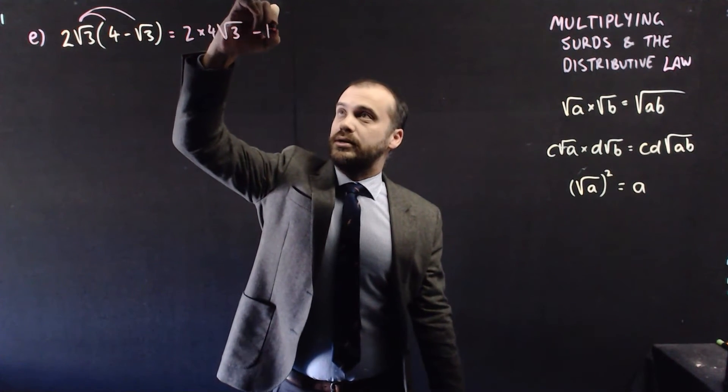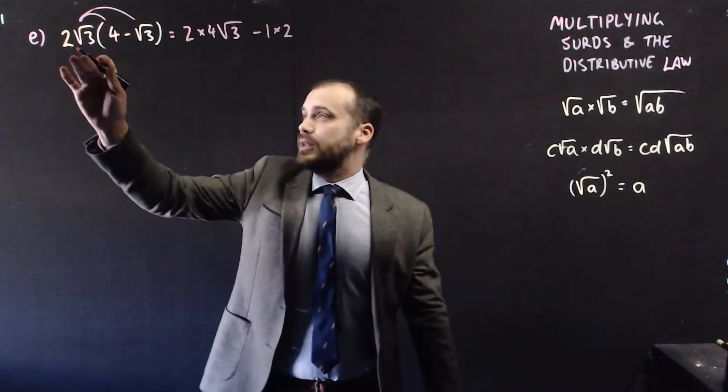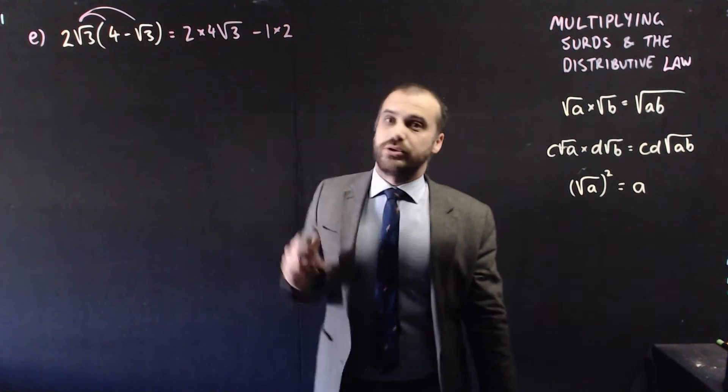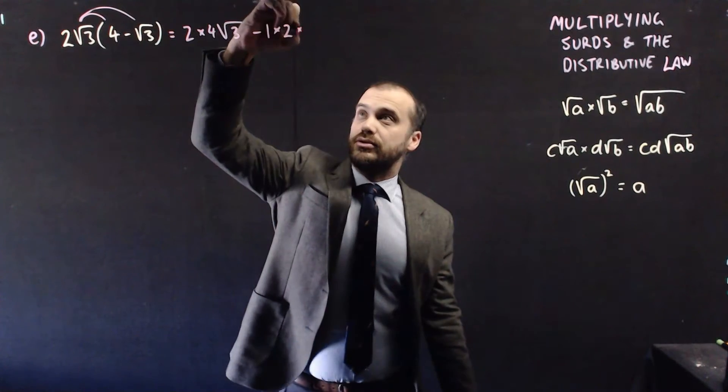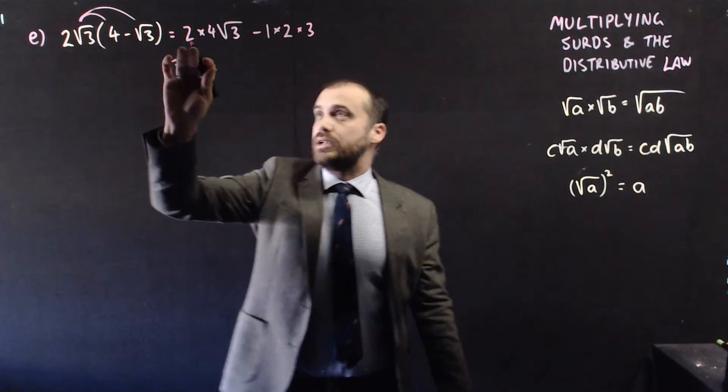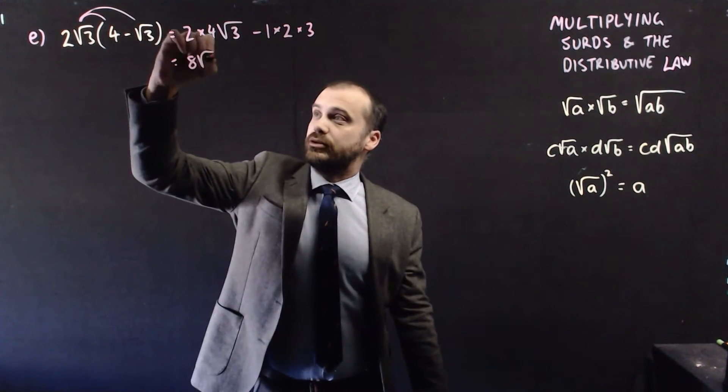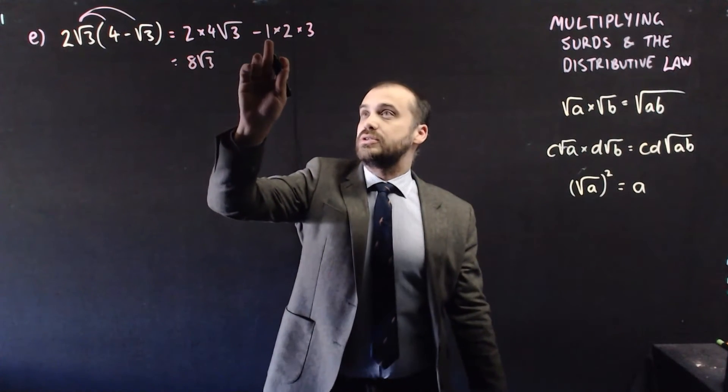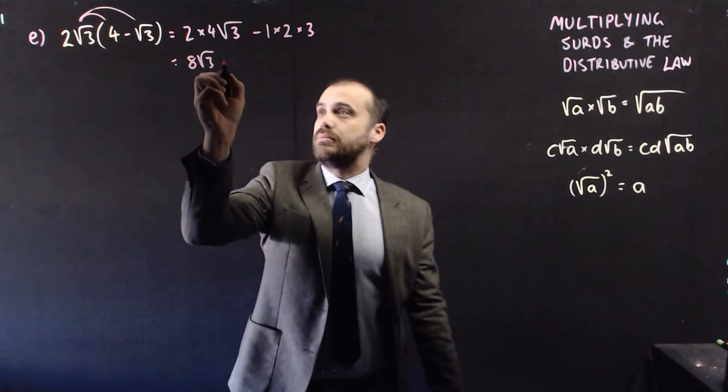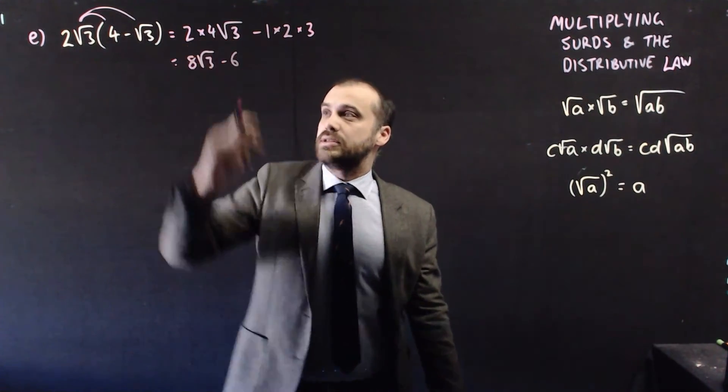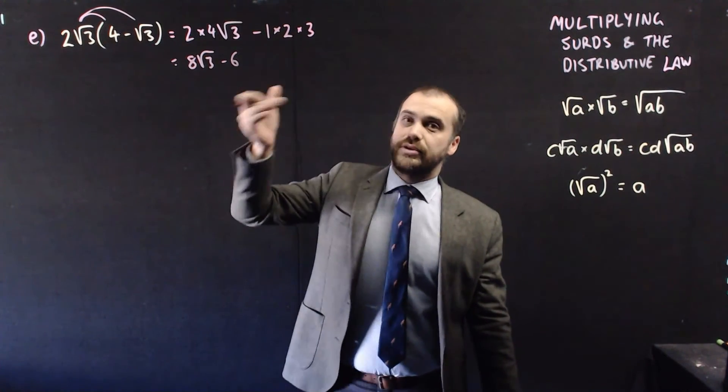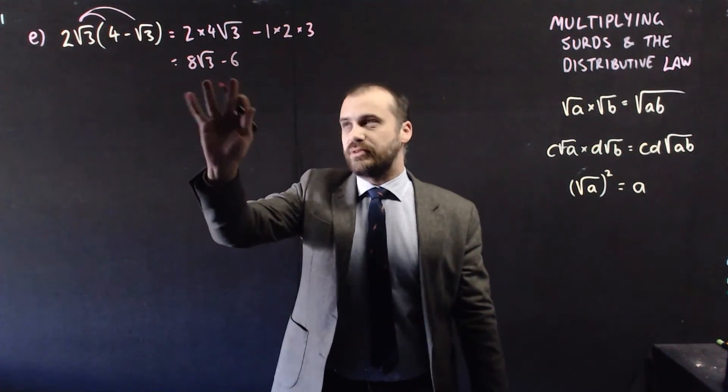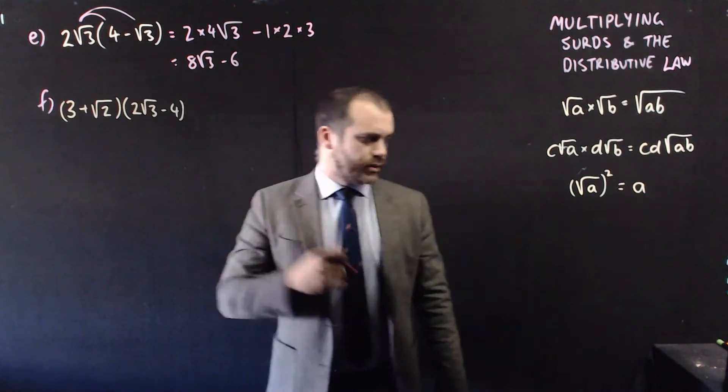Let's do negative 1 times 2. And then it's going to be root 3 times root 3, which we know is 3. 2 times 4 is 8. We get 8 root 3 minus 1 times 2 times 3 minus 6. Our answer is 8 root 3 minus 6. We can't go any further here. We can't simplify that. We can't group those together.